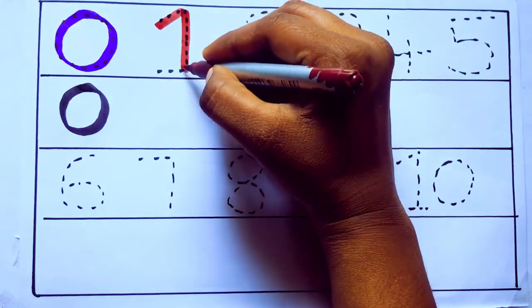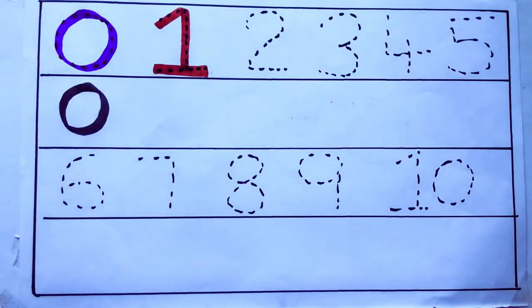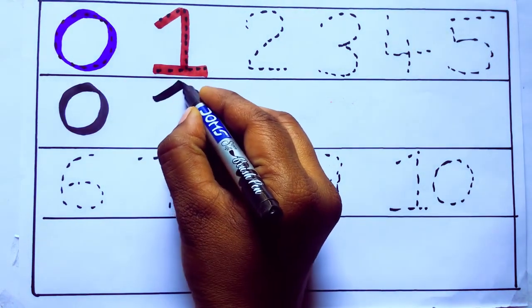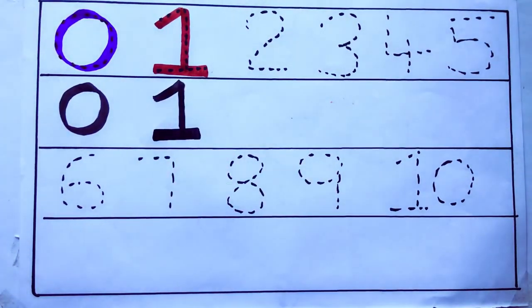1. O, N, E. 1. Number 1. Orange color 2.